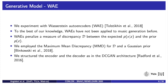Wasserstein autoencoders penalize a measure of discrepancy D between the expected P of X given Z and the prior P of Z, pushing the expectation inside the distance. In all our experiments, we employed the maximum mean discrepancy for D and the Gaussian prior, and we structured the encoder and the decoder as in the DC-GAN architecture, which is a 2D CNN.